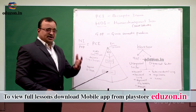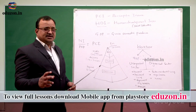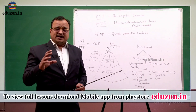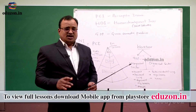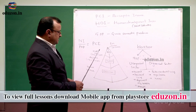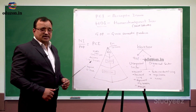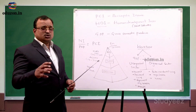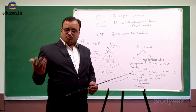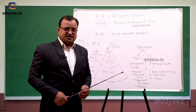Now, how do we derive per capita income? Per capita income is the average income earned by a citizen of a country. Per capita income is derived by dividing national income by the population. So, national income divided by the total population of that country gives us per capita income.